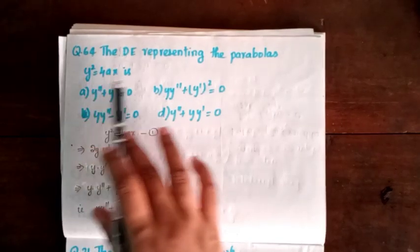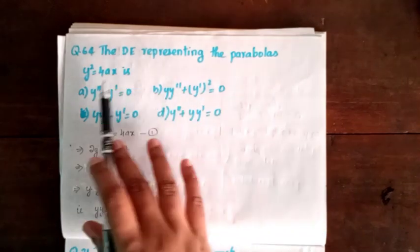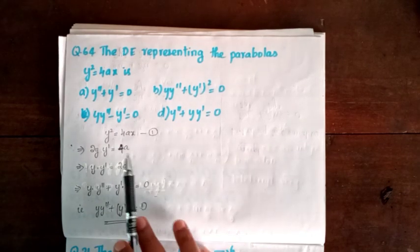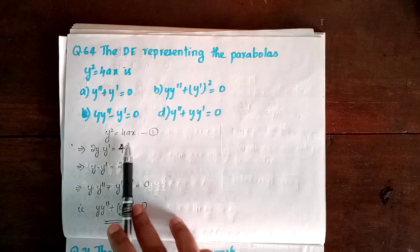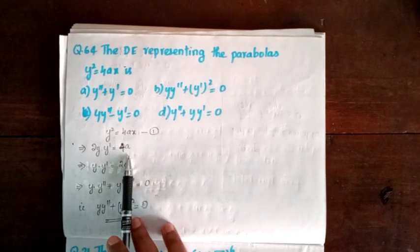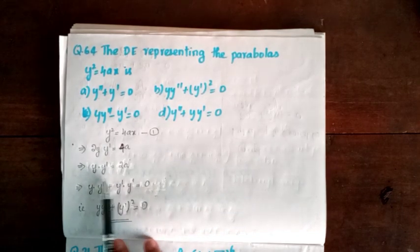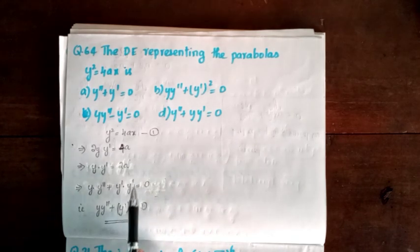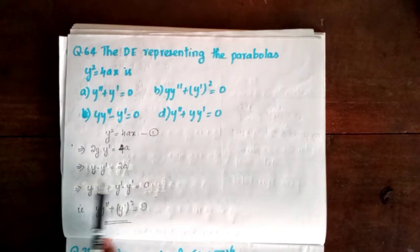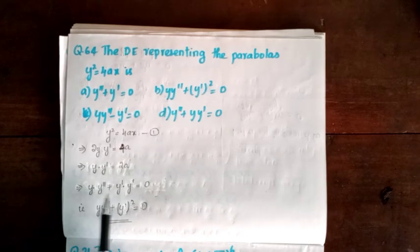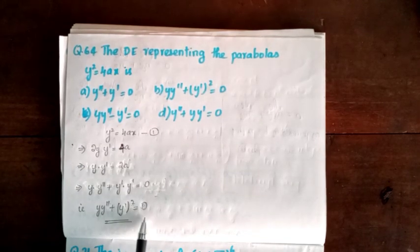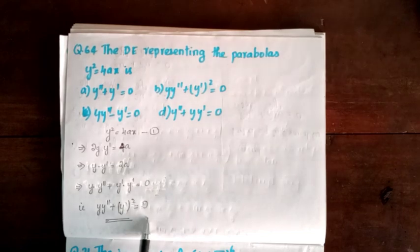Next, Question 64. The differential equation representing the parabola y² equal to 4ax. Differentiating y² equal to 4ax with respect to x gives 2y·y' equal to 4, so yy' equal to 2a. Differentiating again: y·y'' plus (y')² equal to 0. So option B is correct.